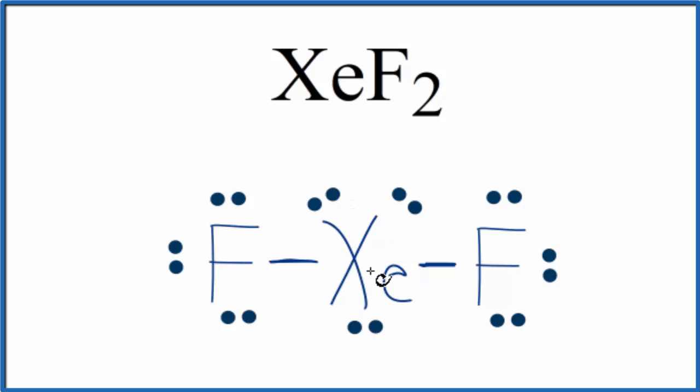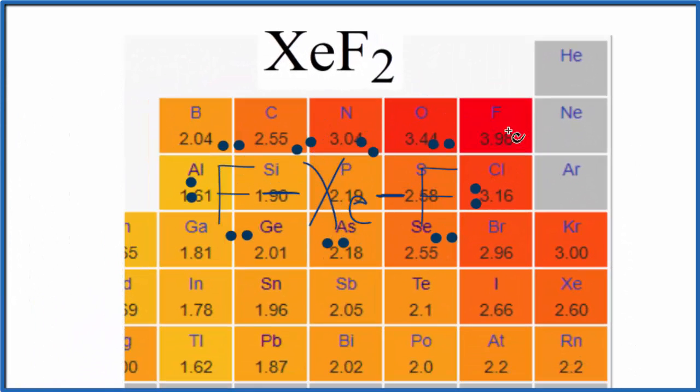We'll look first at the bond between the xenon here and the fluorine, this bond where they're sharing this pair of electrons. Let's look at the difference in electronegativity between xenon and fluorine. So here's fluorine, 3.98, and xenon, 2.60. This difference is greater than 0.5. This is a polar bond.